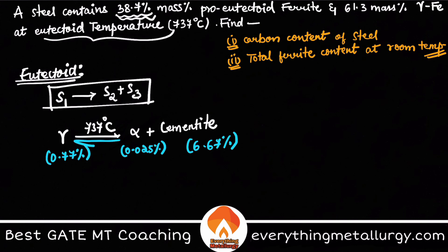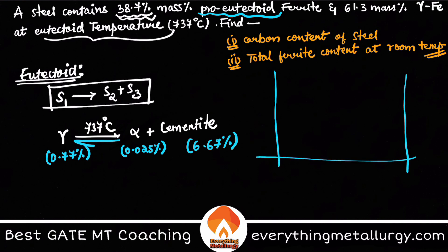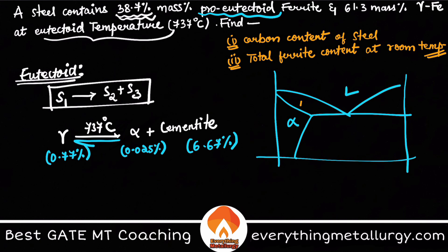Now let me explain the term proeutectoid. There are regions in phase diagrams where there is a two-phase region. Let me take an example of a eutectic phase diagram. At the eutectic point, liquid gives rise to alpha plus beta at a particular eutectic temperature.